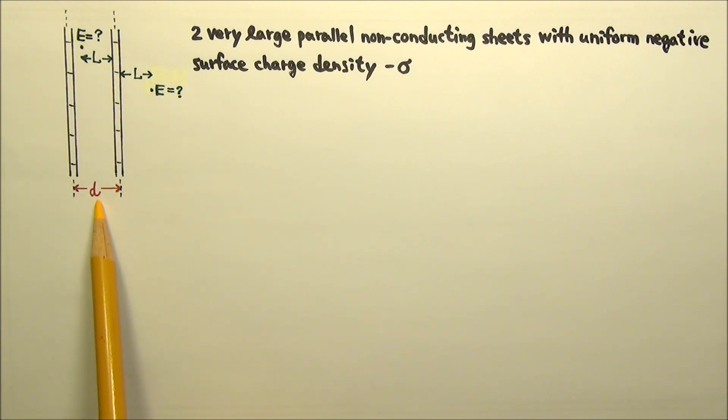The distance between the sheets is d, which is much, much smaller than the size of the sheets, so the sheets can be considered as very large compared to d.